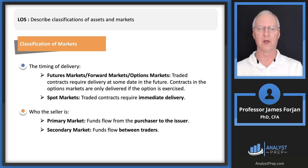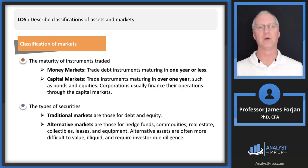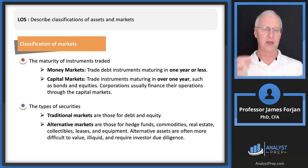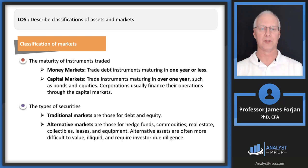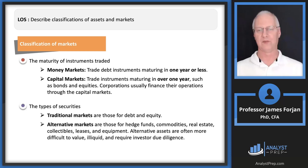Secondary market funds flow between and among investors. Money markets cover securities maturing in one year or less; capital markets cover those maturing in over one year. Traditional securities are fixed income and equity securities. Alternative markets have grown enormously — when I went through the CFA program 20 years ago, the alternative readings were small; now they're much larger. They include hedge funds, commodities through futures markets, real estate, leases, equipment, and collectibles.